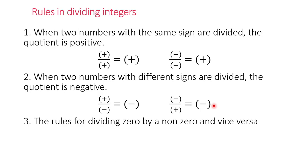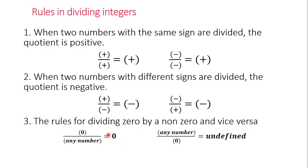However, we have a different rule for dividing zero by a non-zero and vice versa. If we divide zero by any number, the result is always zero. For example, zero divided by 10 is always zero. However, if we divide a number by zero, the quotient is undefined. For example, 10 divided by zero is not zero — rather, the quotient is undefined.